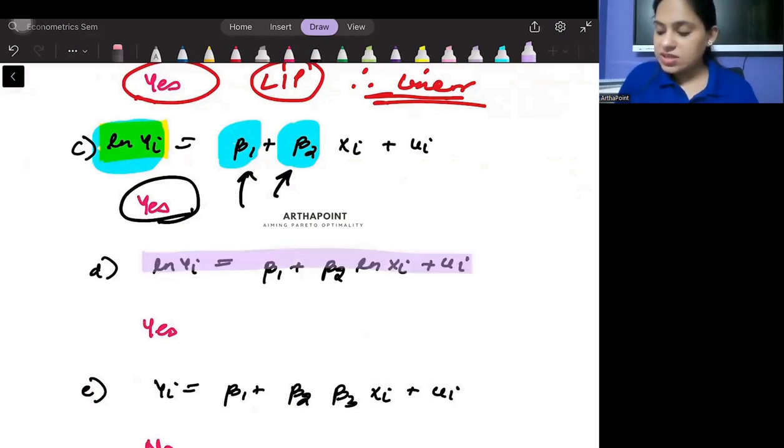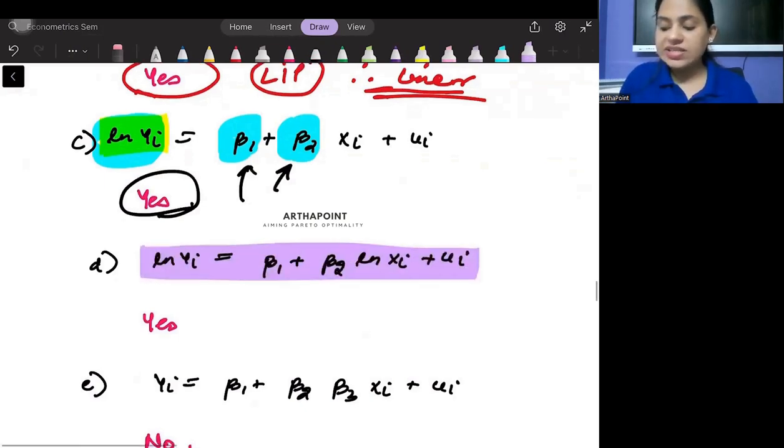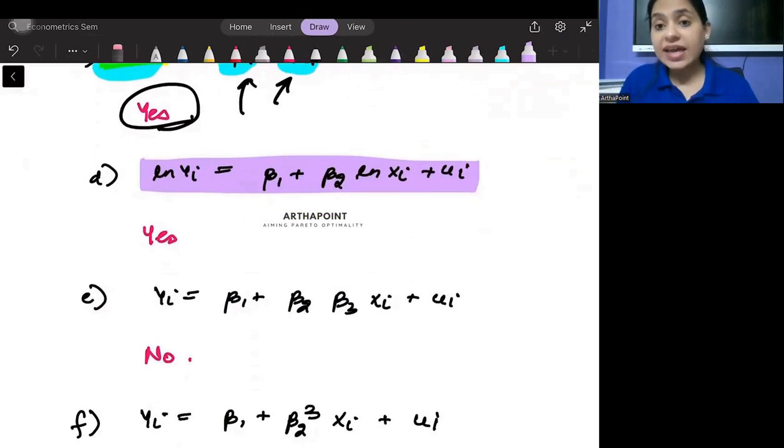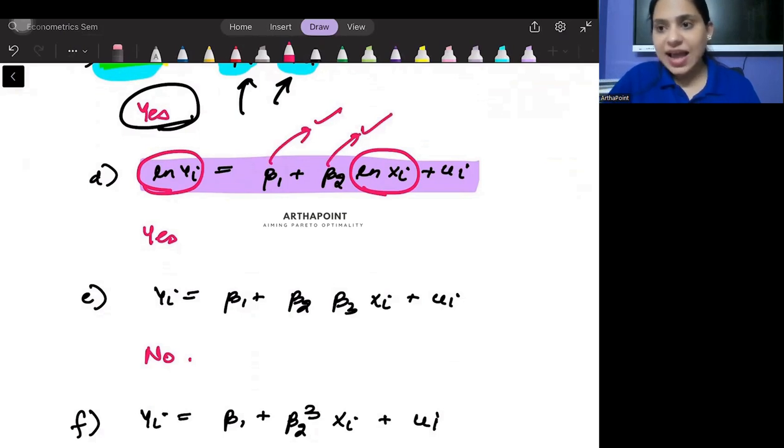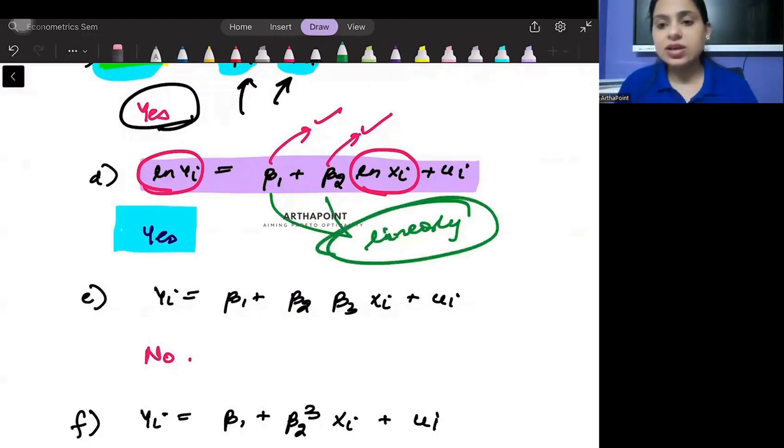Okay, we can look into the next case. So here you can see that both yi and xi are coming in the log form. Here also, I have log. Here also, I have log. But still, my betas are coming in the linear form. I am just concerned with betas. And therefore, I can say that this is a log-log model, but a linear model, because I have betas coming in the linear format. So it is definitely a linear model.